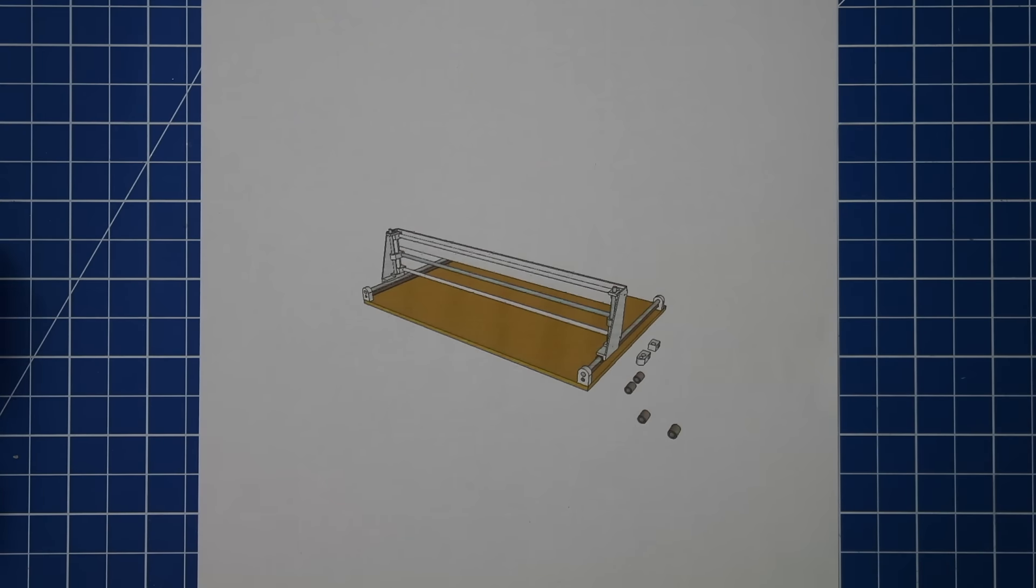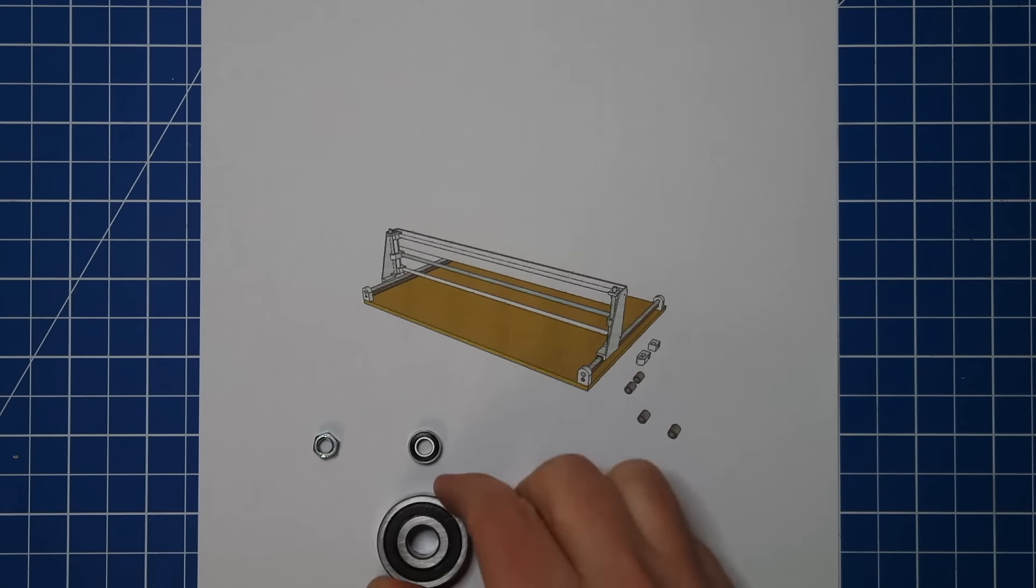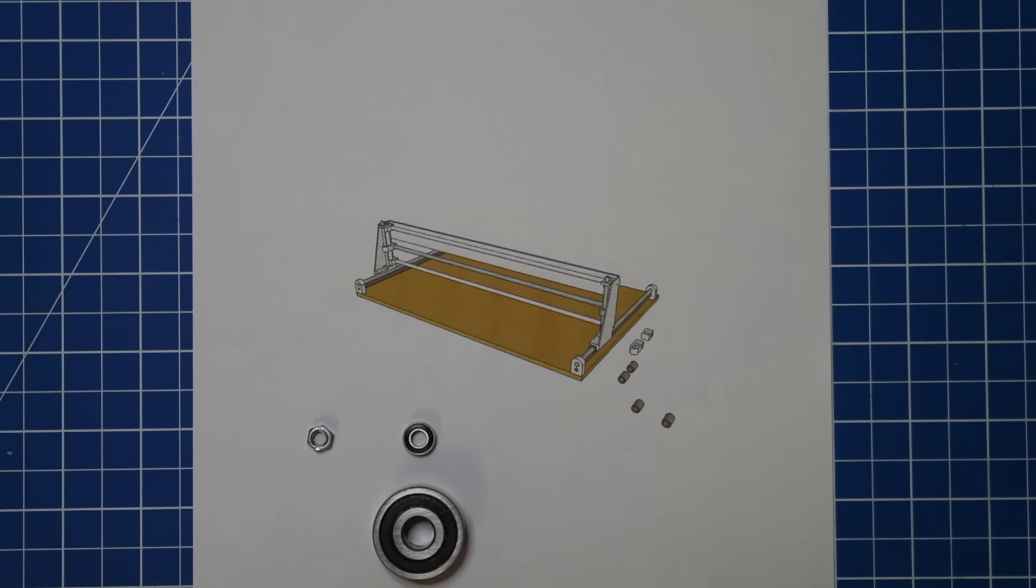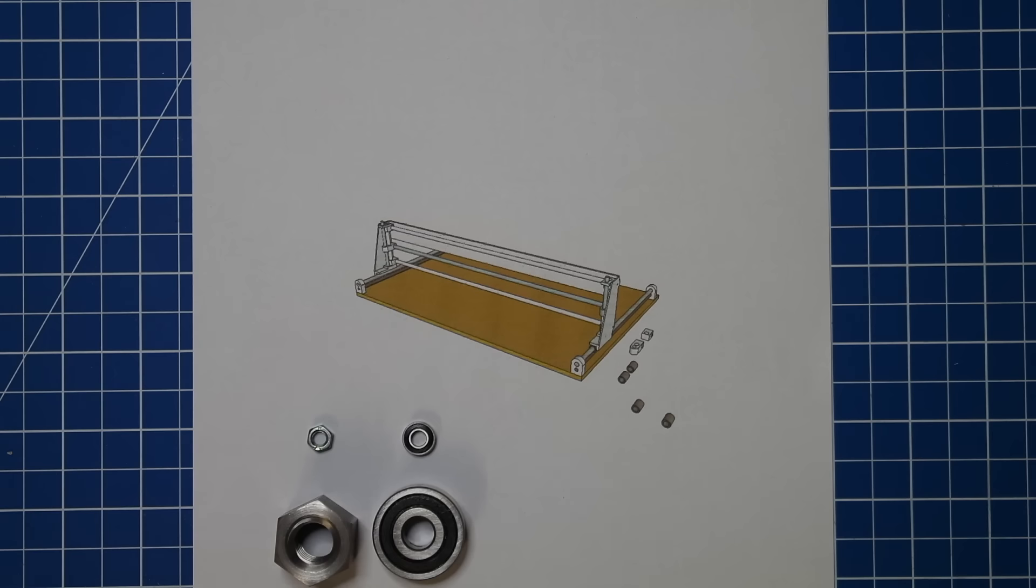The first machines that I built used bearings that were about this size and nuts that were about that size. The new machine is going to use bearings this size and nuts this size.